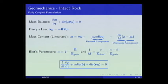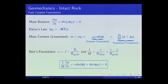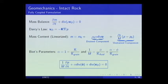For the intact rock, we begin with the fully coupled formulation. We have the mass balance equation and use Darcy's law with a linearized mass content. In this linearized form there are two components: the drained component, which accounts for the influence of volumetric strain on mass content, and the undrained component, which accounts for how pressure changes the mass content. We use the Biot parameters accounting for compressibility of the grain, fluid, and porous matrix. We achieve this parabolic equation.